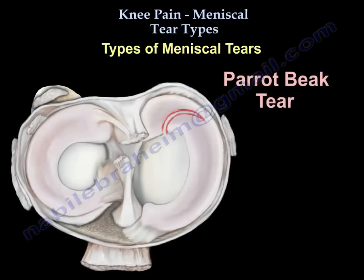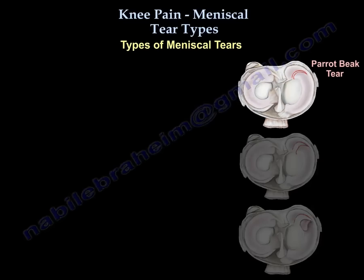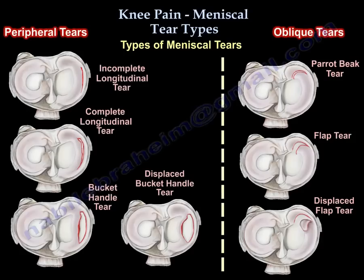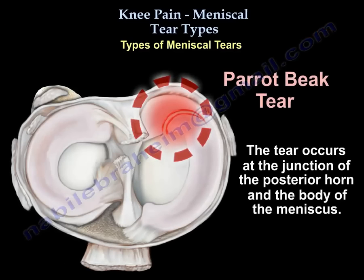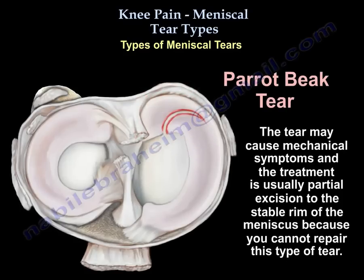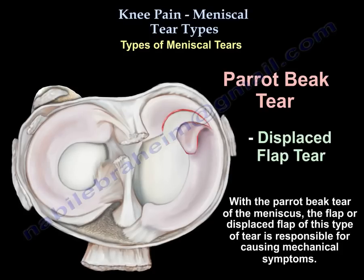The other type is called parrot beak — this is an oblique tear. There are about three oblique tear subtypes. The parrot beak occurs at the junction of the posterior horn and the body of the meniscus. It can cause mechanical symptoms and the treatment is usually partial excision to a stable rim. If the tear is bigger, it can become a flap, and then a displaced flap that causes mechanical symptoms.